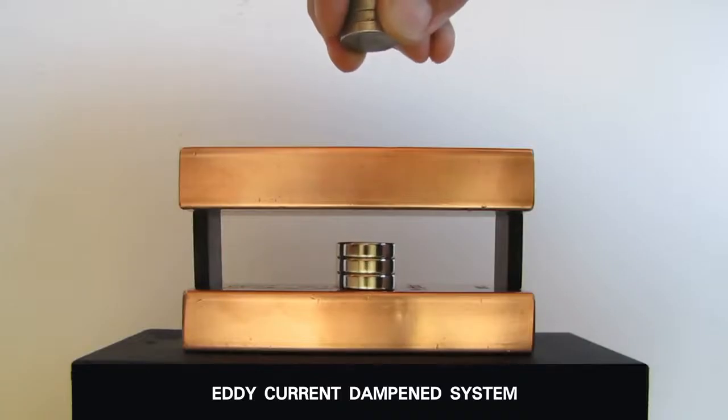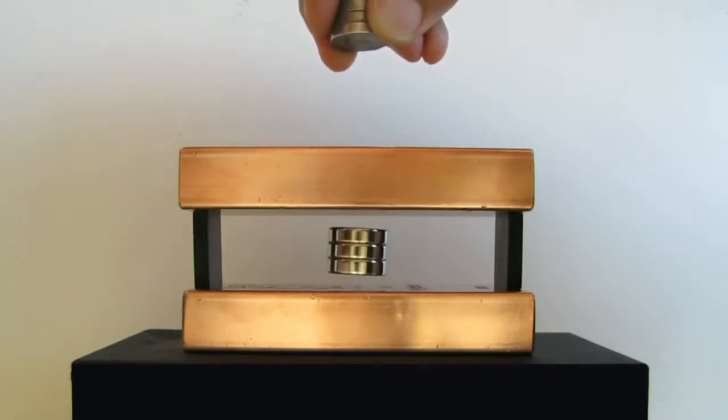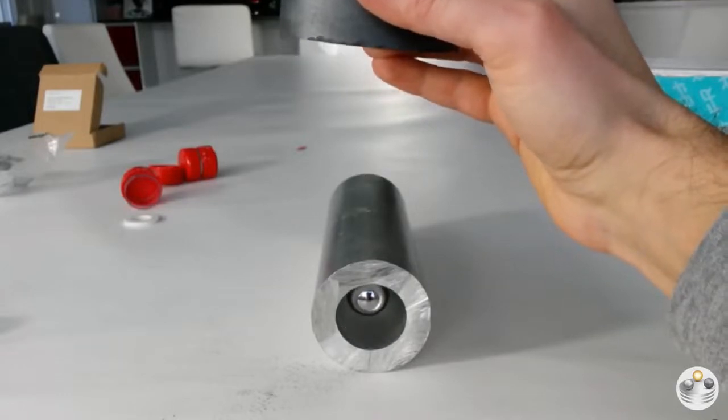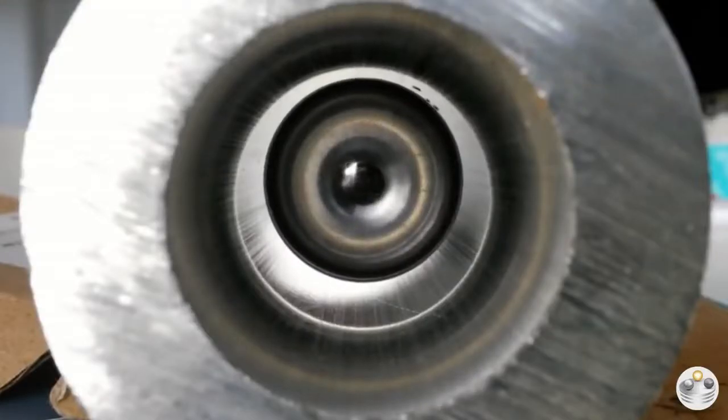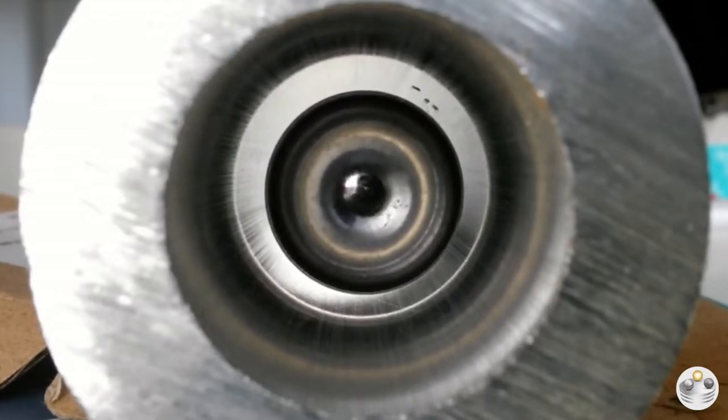It is possible to levitate a magnet in a proximity of a conductive material like copper or aluminum by manually adjusting another magnet above. The levitation is made possible by eddy currents. Those currents produce their own magnetic field that resists movement of the magnet. This dampens the system, slowing the movement of the suspended magnet.